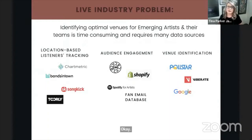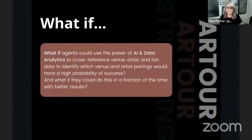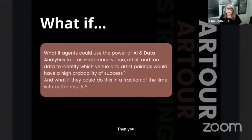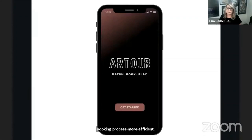As I mentioned, determining optimal routing and finding the perfect venue fit is time consuming and requires cross-analyzing across many of the data sources you see below. So what if agents and independent artists could use the power of AI and analytics to cross-reference revenue, venue, artist, and fan data in order to make the booking process more efficient in a fraction of the time and with better results?